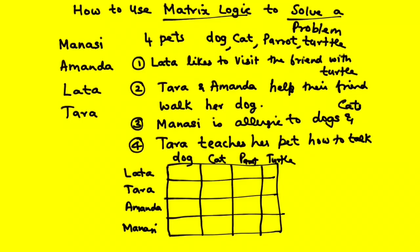Let's put a cross in the first row under turtle, because Latha likes to visit a friend with a turtle — that means she doesn't own a turtle. Now let's put two crosses to show that Tara and Amanda do not own a dog. So we put a cross for Tara and a cross for Amanda under the dog column. These two crosses come from the second piece of information.